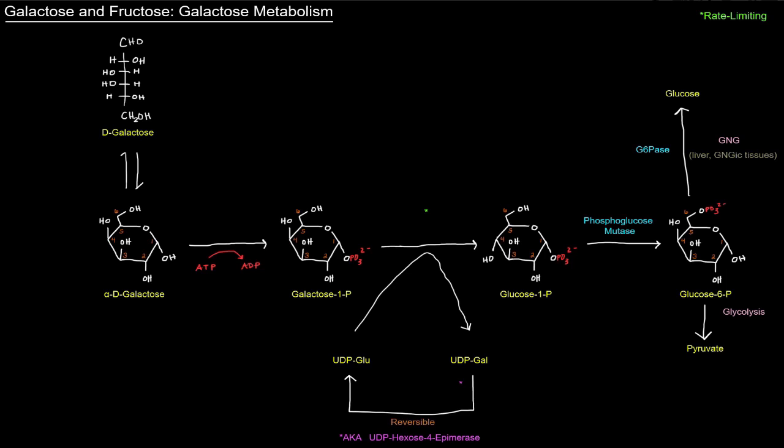We've got the alpha-D-galactose here. The first thing that's going to happen is that we're going to convert that into galactose-1-phosphate, and that's going to be done by galactokinase. That name should make sense - it's acting on galactose, it's acting as a kinase, it's adding a phosphate to carbon number one, and that phosphate is coming from ATP specifically. Now we've got galactose-1-phosphate.